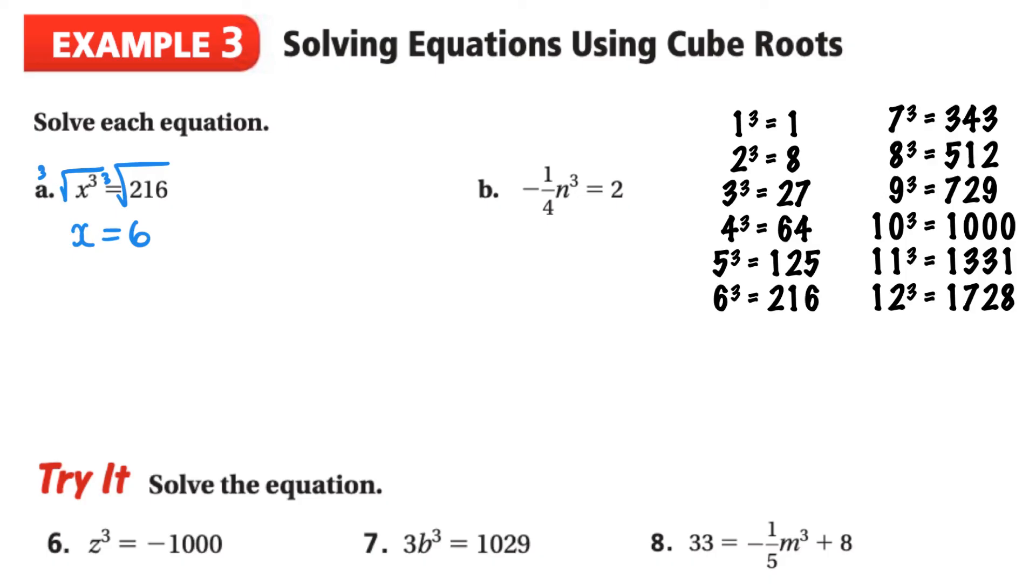Looking at letter B, we've got negative 1 over 4, and then n cubed is equal to 2. When we're solving equations, we are going to follow PEMDAS or order of operations backwards. If we look at our variable, it's here, and it's being cubed. So this has to be the last thing that gets done. The first thing I need to do is something with a negative 1 fourth. So negative 1 over 4 is being multiplied to n cubed. I could divide both sides by negative 1 over 4, or because this is a little bit easier for me, I'm going to rewrite this as negative n cubed over 4. And then I have that as equal to 2. It's easier to see that I can multiply both sides by 4 here, so that this cancels.